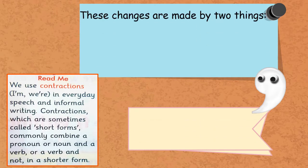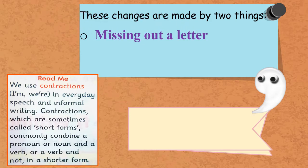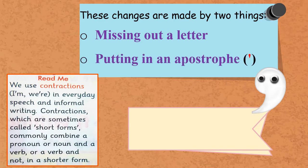These changes are made by two things. When we write the words in shorter form, we do two things: first, missing out a letter—we remove one letter from the word. And second, putting in an apostrophe. Apostrophe is just like same as comma, but we put apostrophe on top of the word. The letter which we remove, we replace by an apostrophe.